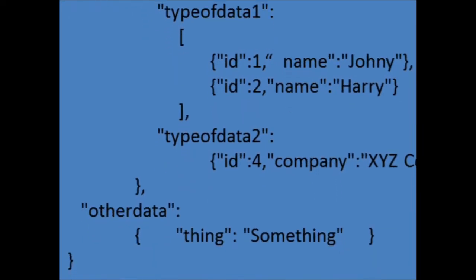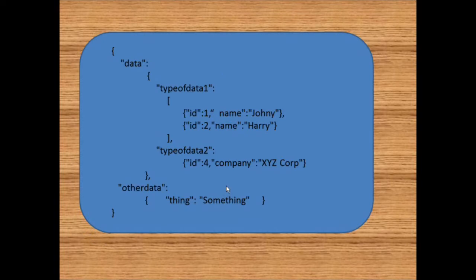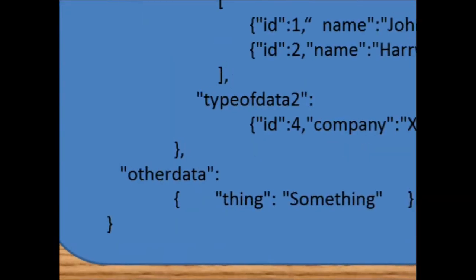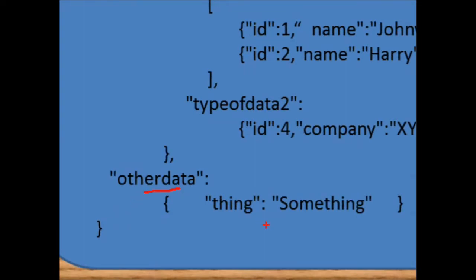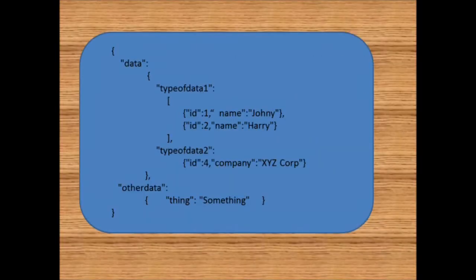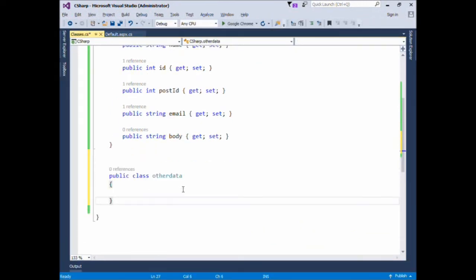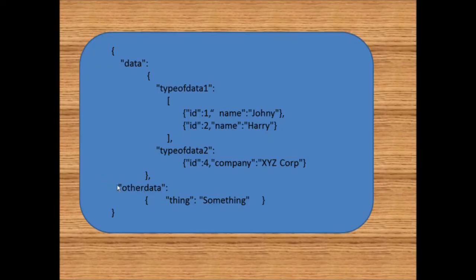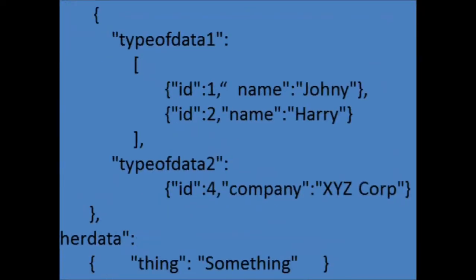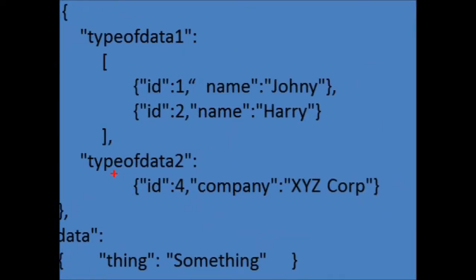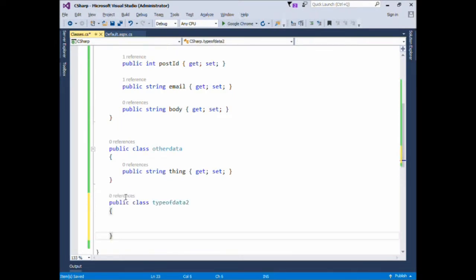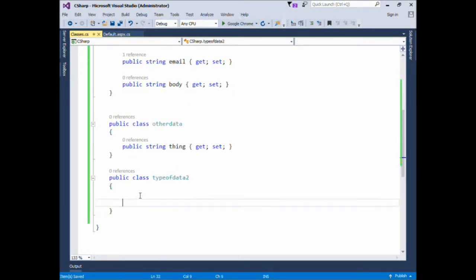Let's see how we can read this complex data structure into our C# object. We'll keep it simple — starting with OtherData, the second root element. We'll create a class named OtherData with one field named Thing. Then we'll create a class TypeOfData2 with two fields: ID and company.